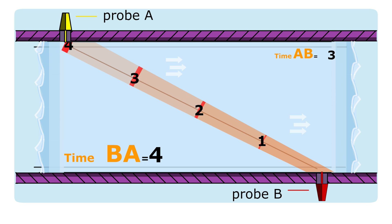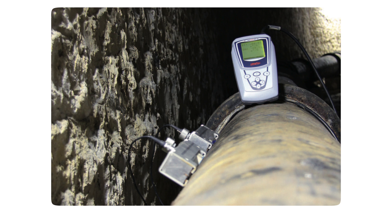Using the difference of the travel times and the physical dimensions of the installation, we get the fluid velocity and the flow rate of the water.